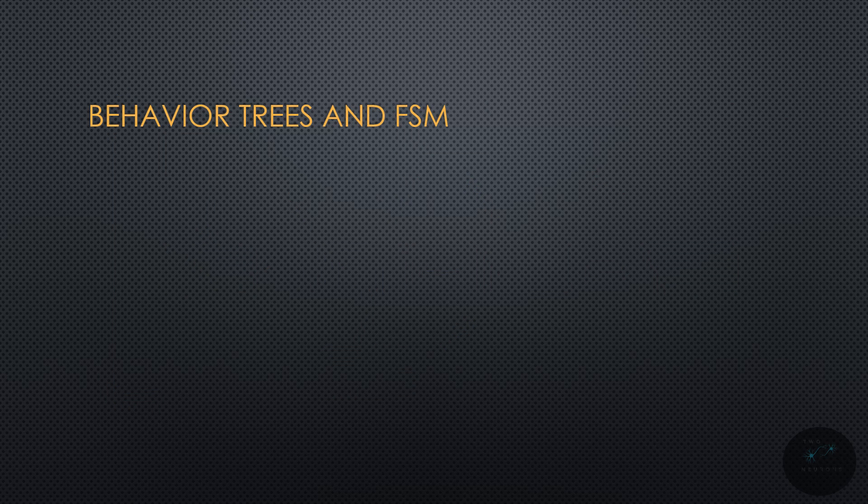Behavior trees and finite state machines are two of the more common methods you'll see tutorials on, and some of the more common approaches you'll see people learning these materials use. There are more advanced systems like Utility and GOAP. For anyone who's played FEAR, that is GOAP — their AI didn't use a basic FSM system. It used a goal-based system. So, I hear a lot of questions about behavior trees often.